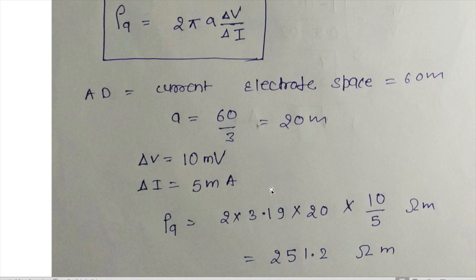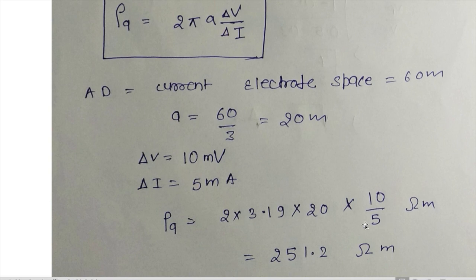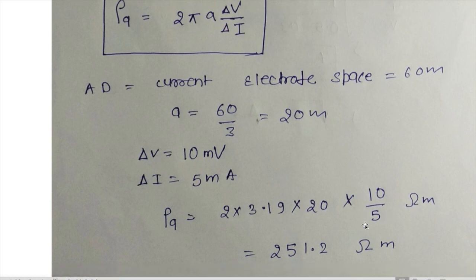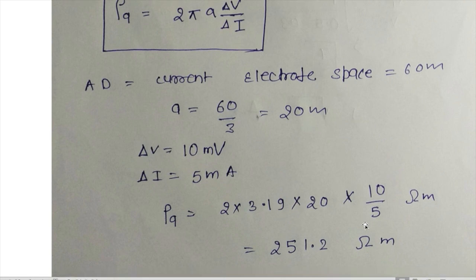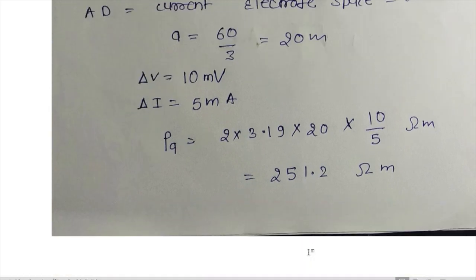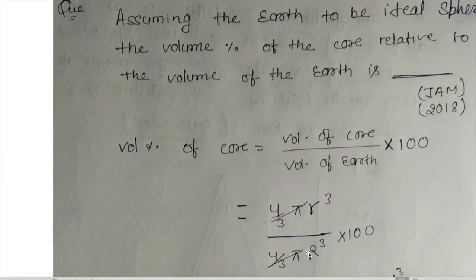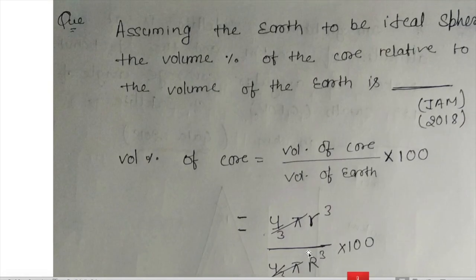Putting the values into the formula: 2 × 3.14 × 20 × (10/5), the answer becomes 251.2 ohm-meters. So the right answer is 251.2 ohm-meters.